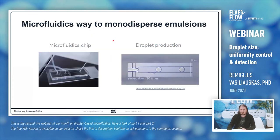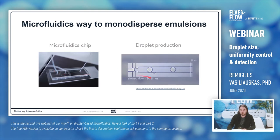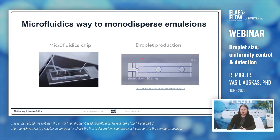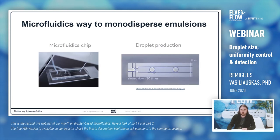One of the ways to produce monodispersed droplets is microfluidics. In a microfluidic chip — for example with glass and PDMS — you have microfluidic channels in which you run your liquids and produce droplets one by one. The speed of droplet production can range from a few hertz to kilohertz or even megahertz. However, production throughput is quite low and for industrial applications it's hard to employ microfluidics directly — you need to automatize or parallelize the system.